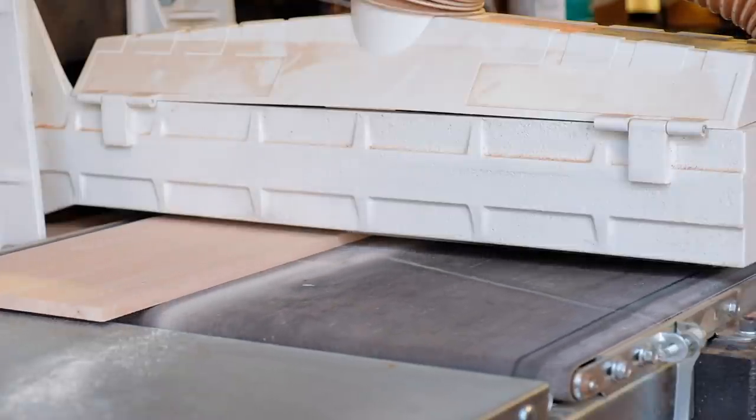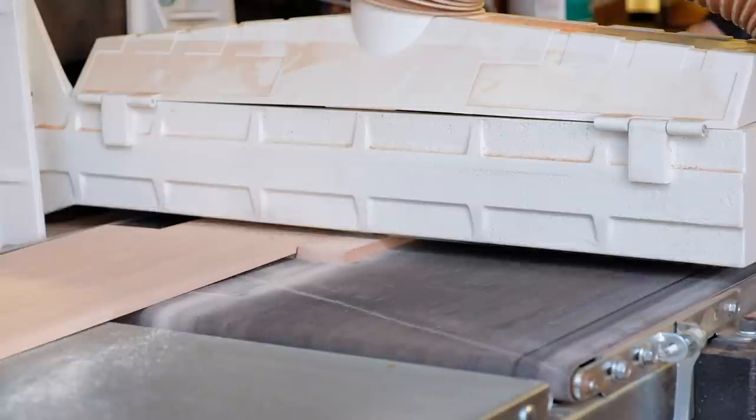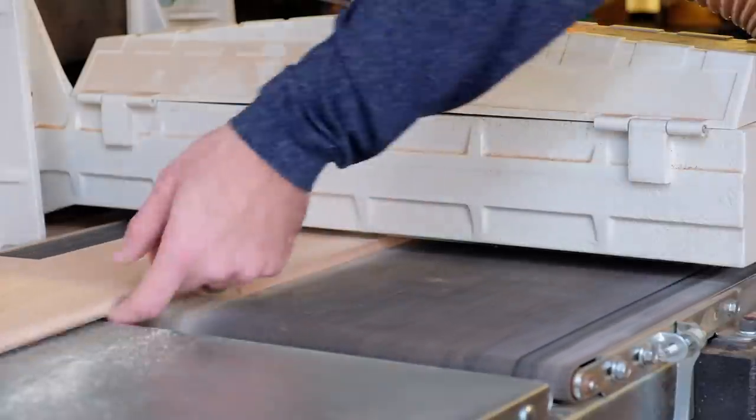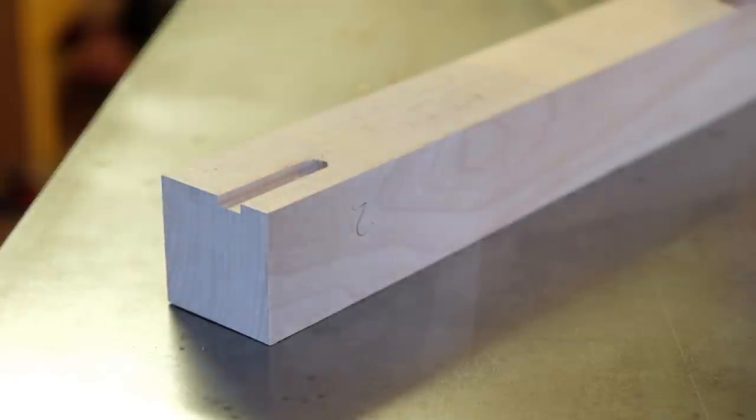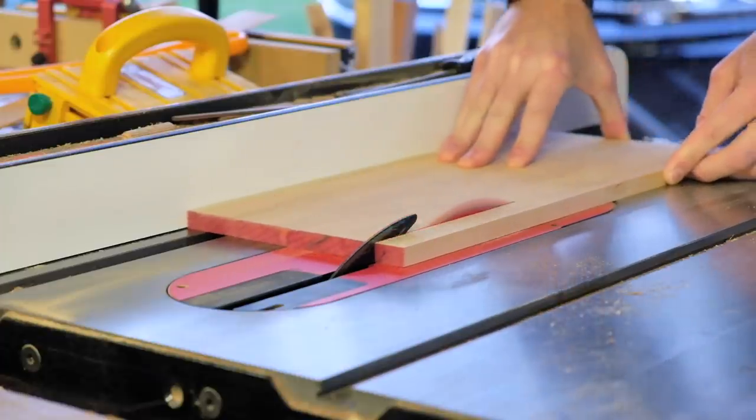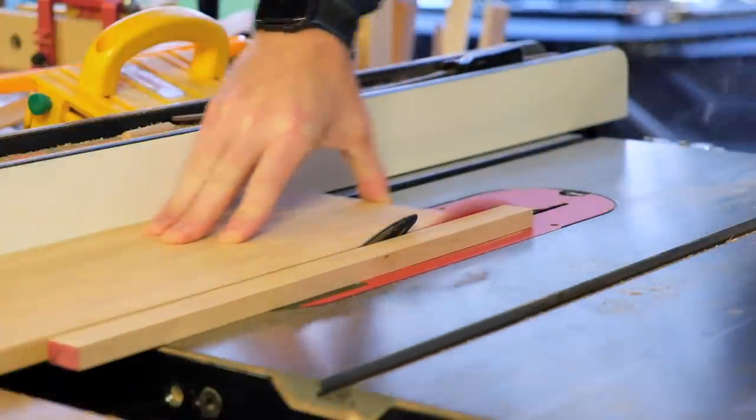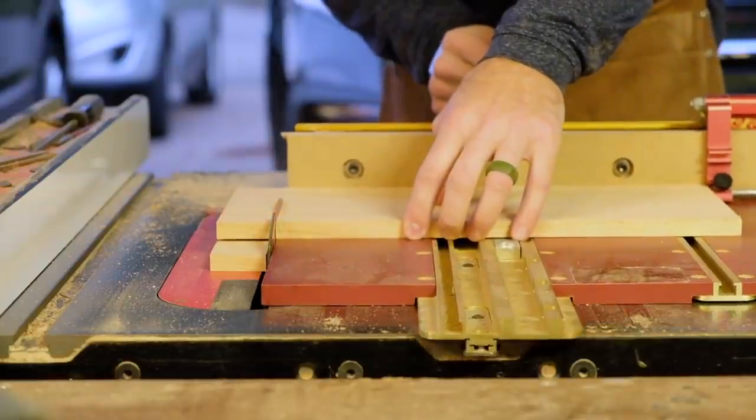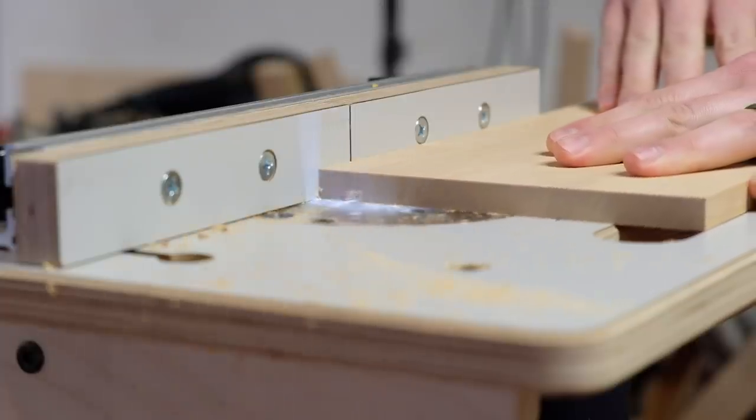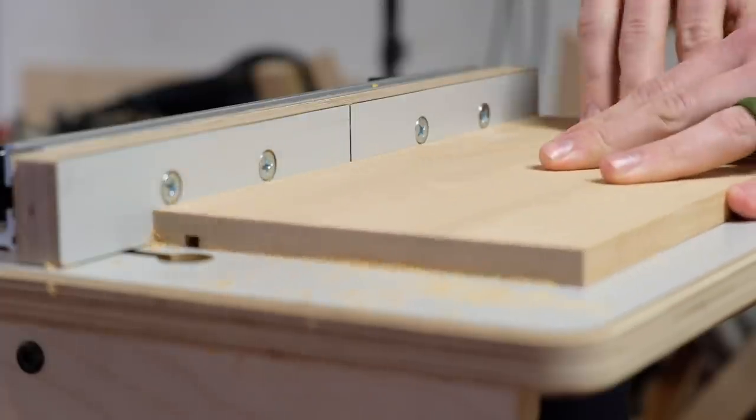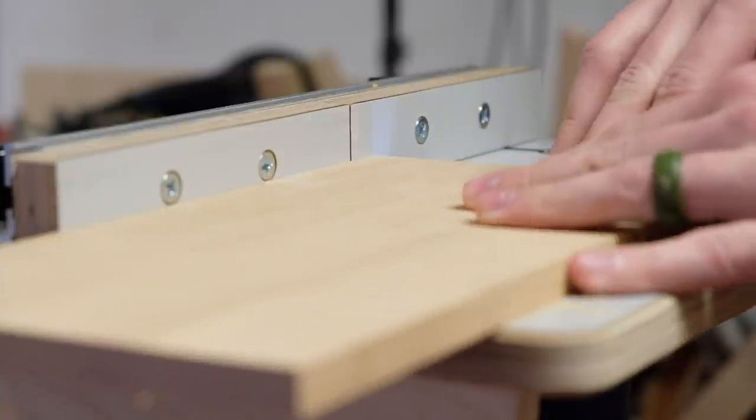In the past I would use a dado stack for my smaller apothecary chests but I've since switched to a new method involving the router. The next few steps are fairly typical: rip the panels to final width and crosscut to final length. I then route a groove to hold the back panel and from there I can work on the joinery for the outer case which as always is done with dowels.